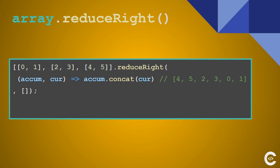reduceRight works like reduce but in reverse order. In the previous example the final result was one, two, three, four, five — and with reduceRight we have four, five, two, three, zero, one. This also flattens the array but in reverse order.